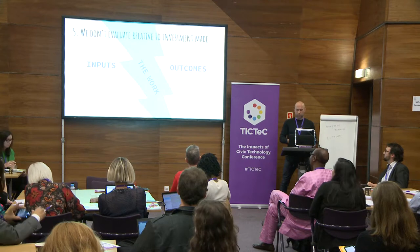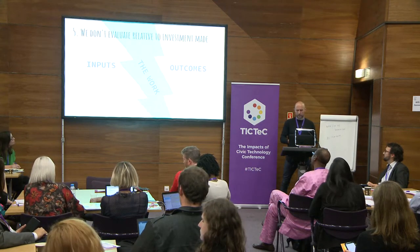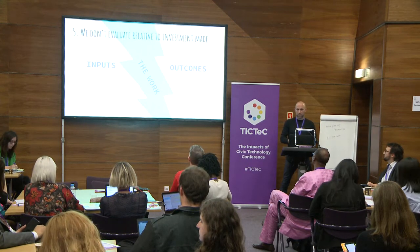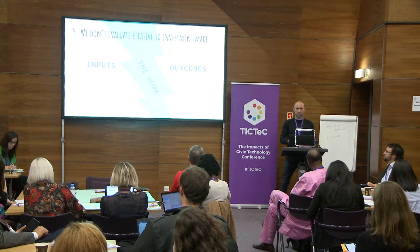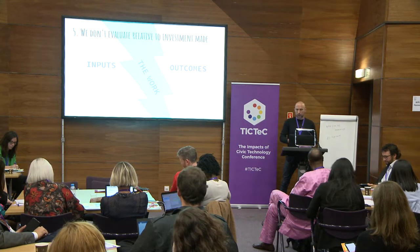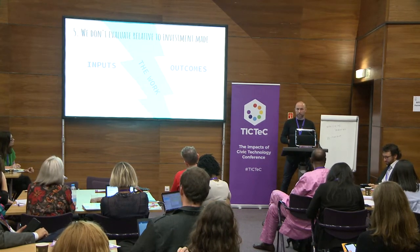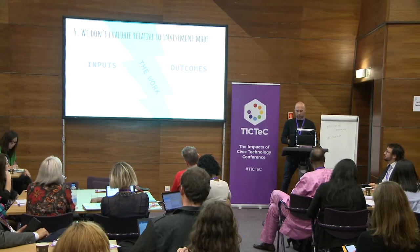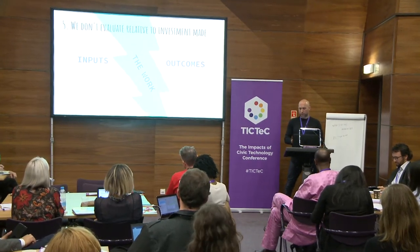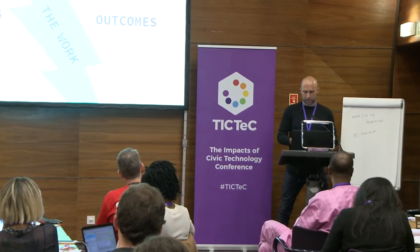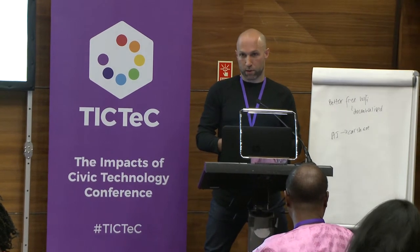Even when we do adequately measure outcomes, we often fail to measure them in relation to the resources that were invested in the work, and this has a lot of consequences for our space. Resources might mean grant money, but they can also take the form of public attention — especially if one group dominates the public's finite attention span for an issue. Take Jumo, which was going to be the one single central platform for nonprofits online, with inputs including $3.5 million in grant funding, a high-profile launch, contributions from thousands of nonprofits, and a million people creating profiles.